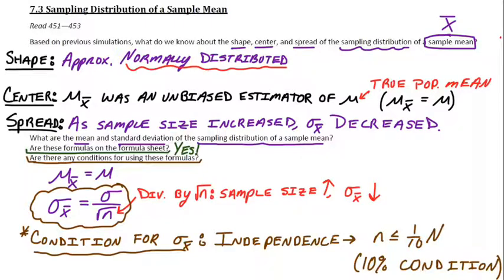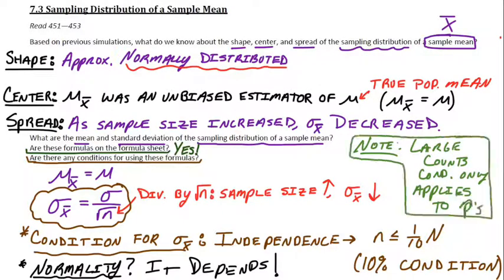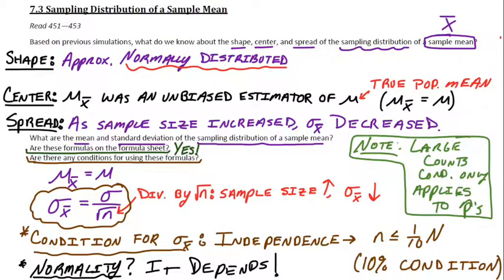The only other condition we have to check is for normality. For now, we're just going to say it depends — can we trust that the distribution is actually normal? There are a couple of different scenarios we're going to look at. I do want to be clear: the large counts condition doesn't apply here. Large counts only applies to p-hats, which was 7.2 — where it was np and n(1-p). That doesn't apply here. That's for p-hats.